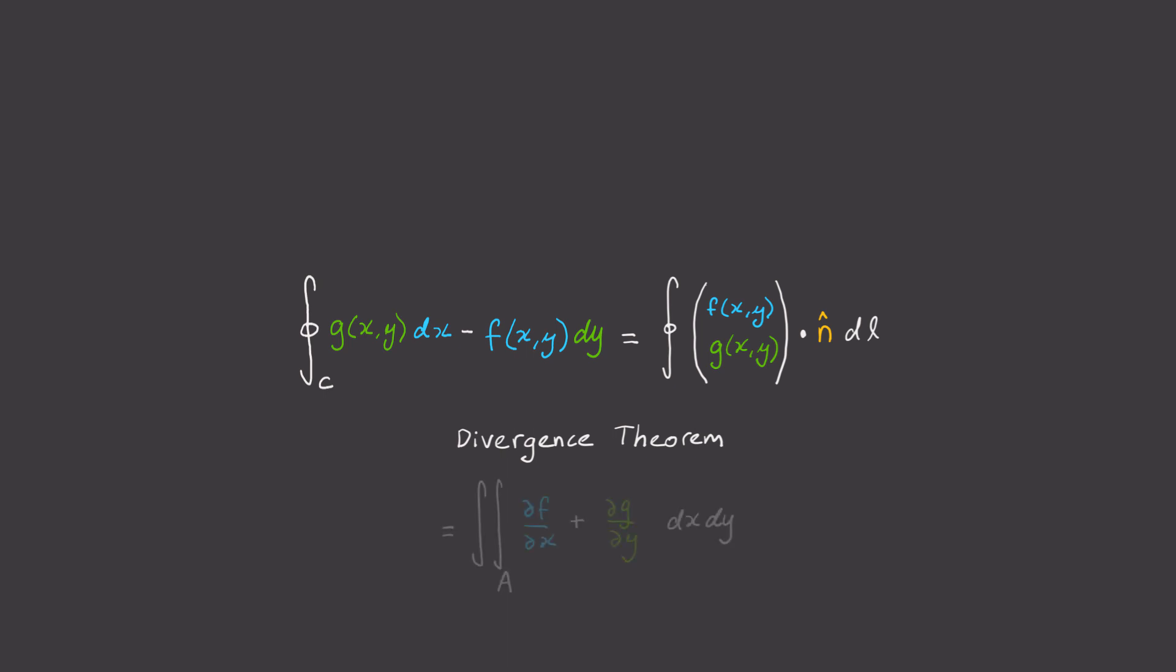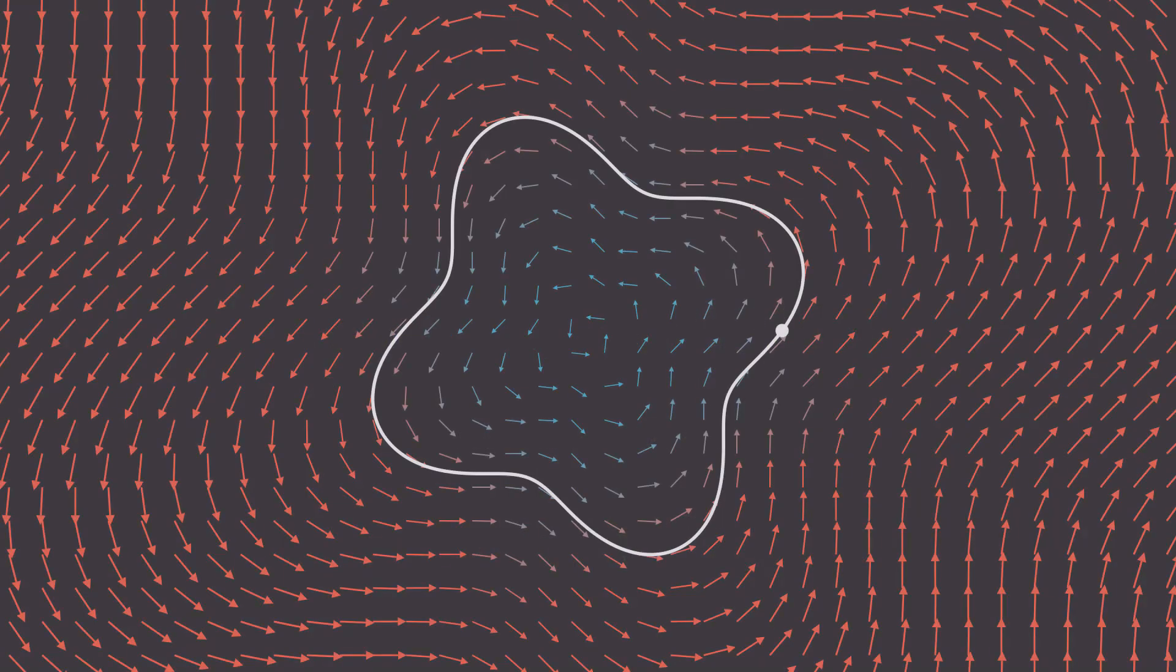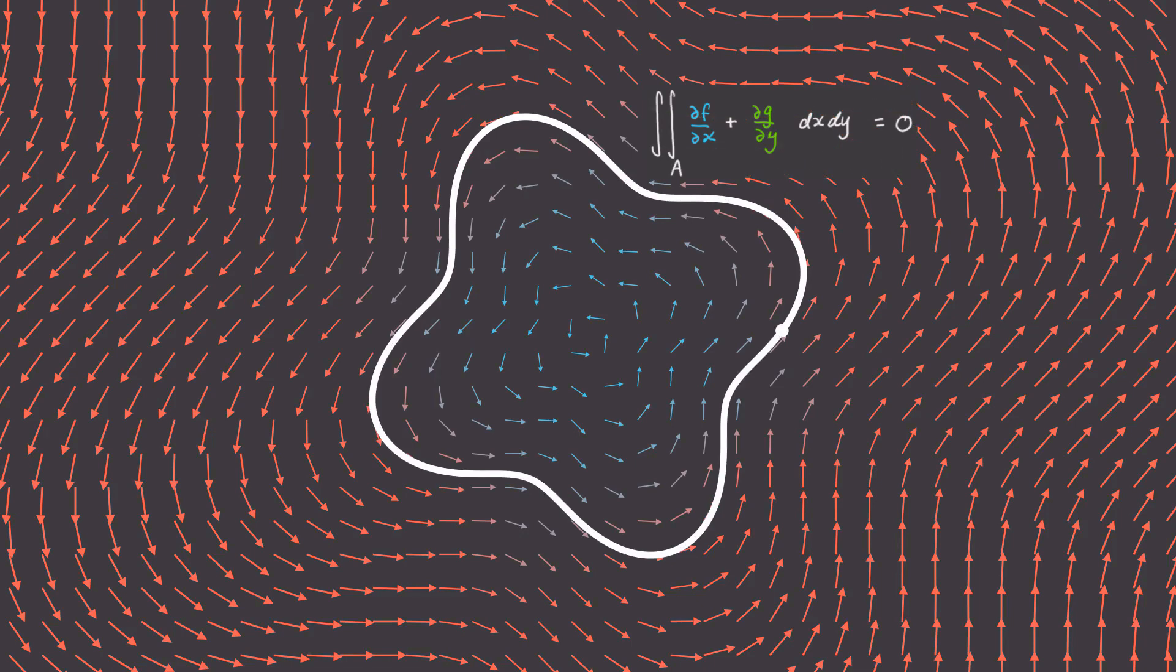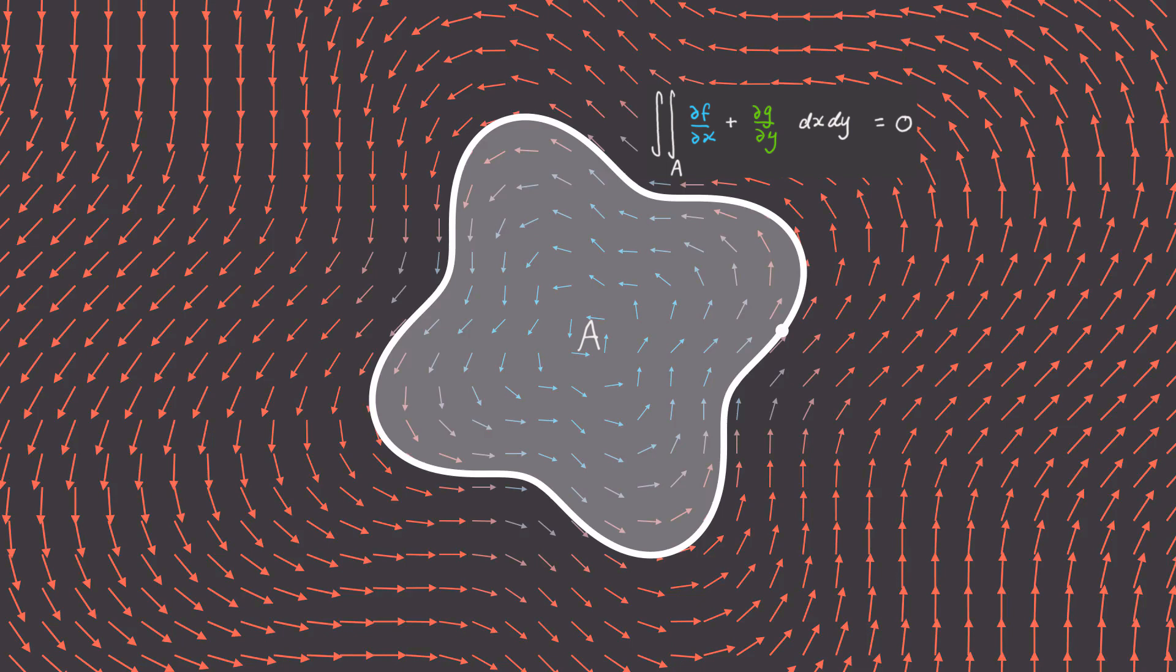I only bring it up so that I can make use of what physics nerds call the divergence theorem. It turns out that for any simple closed curve this expression is also equal to the double integral of the partial derivative of f with respect to x plus the partial derivative of g with respect to y times dx dy.